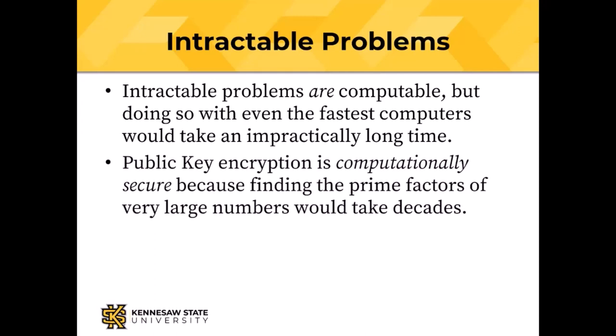Public key encryption works because finding the prime factors of large numbers is intractable — it would take decades. You could write a program in Python that finds the prime factors of large numbers and come back in about 30 years.